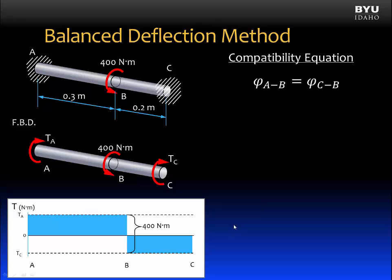From this, we can write our compatibility equation, which will be that the angle of twist from A to B is equal to the angle of twist from C to B. Or another way to say that: the angle of twist from A to B plus the angle of twist from B to C will equal 0.